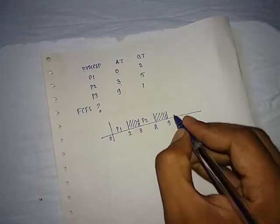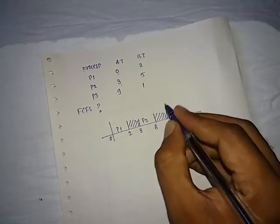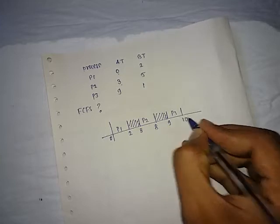At 9, there is a process that's P3 and its completion time is 1, that means 9 plus 1, 10. So it completes your Gantt chart.